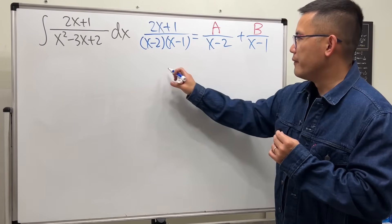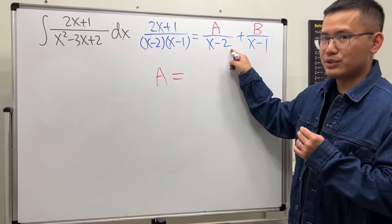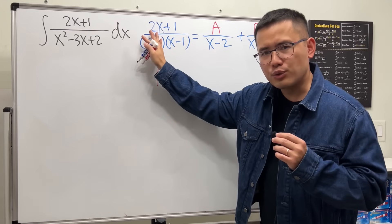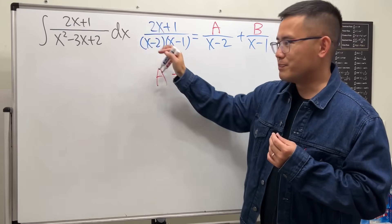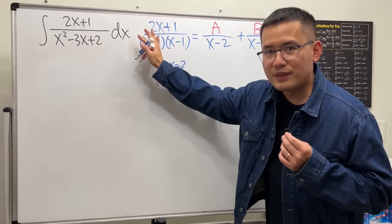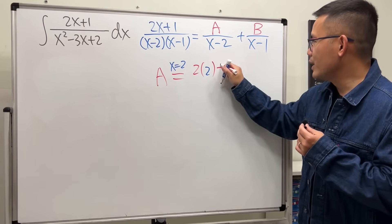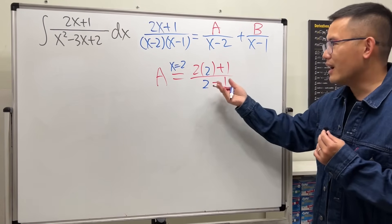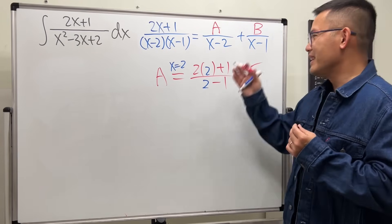All right, how do we find A? Let's use the so-called cover-up method. Let me show you. A is going to be easy, you'll see. On the bottom we have x minus 2. We go back to the original and cover it up. Cover up the x minus 2, and you ask yourself, x minus 2, how can it be zero? x has to be 2, right? Yeah. So we put x to be 2, and we plug that into here and here, not here because we covered it already. So on the top we have 2 times 2 and then plus 1, over this 2 here and then minus 1. On the top I believe we get 5, on the bottom I believe we get 1, and I believe 5 divided by 1 is equal to 5. So A is equal to 5.